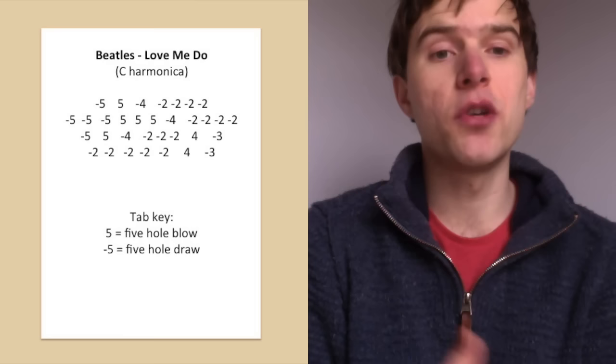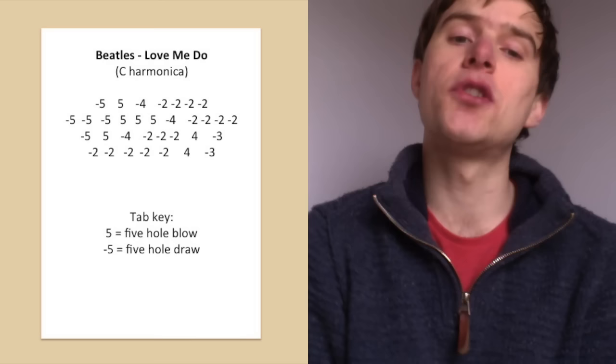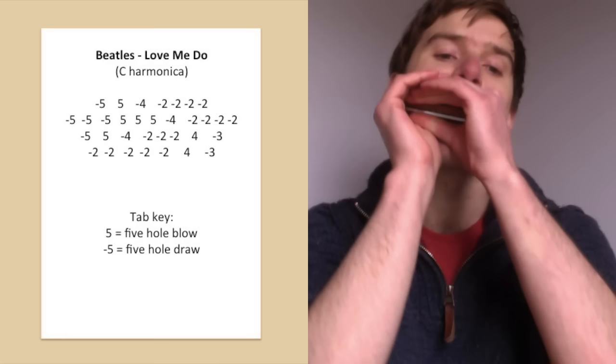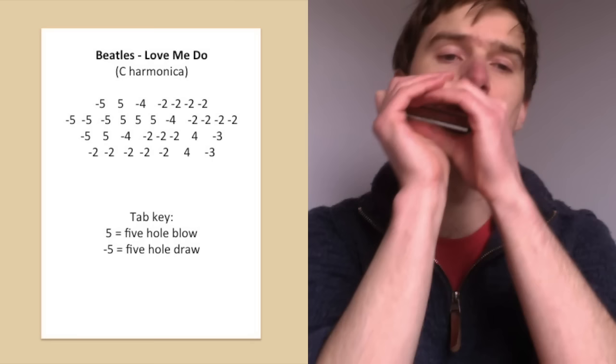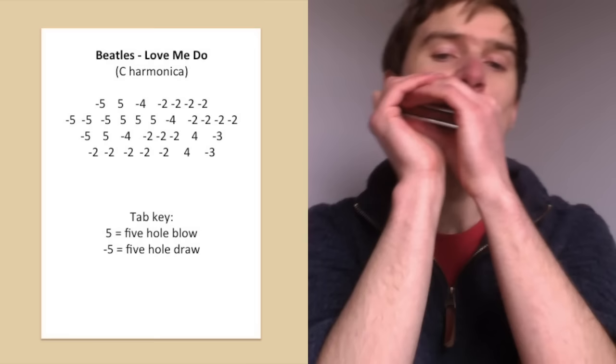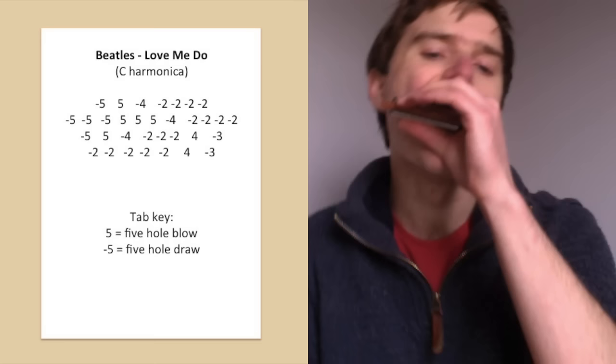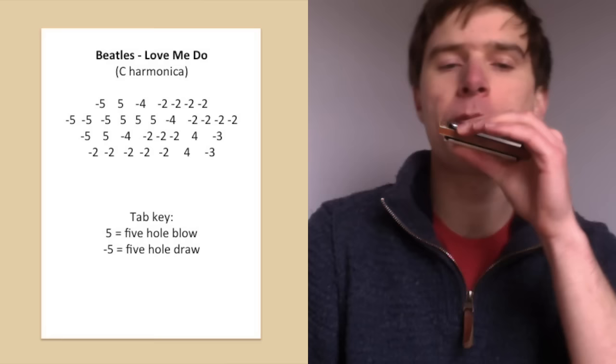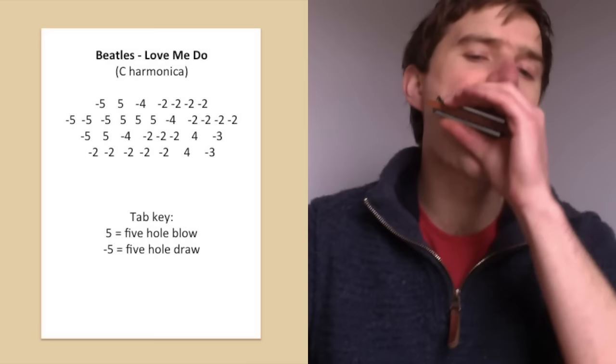So, the line is five-draw, five-blow, four-draw, and then down to two-draw, which you play three times. So, up to that point it's the same as line one, but then instead of playing two-draw for a fourth time, we go to four-blow and three-draw. And it's quite quick. One, two, three, four... So, that's our third line.